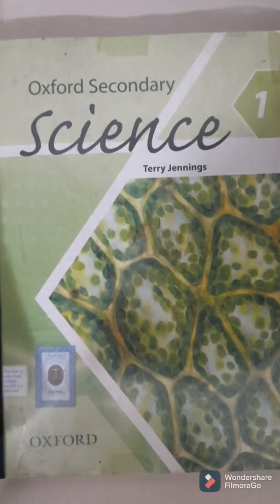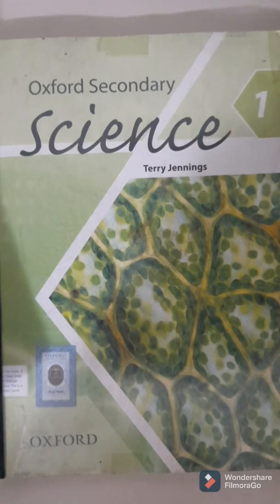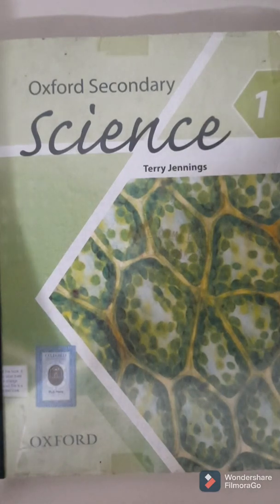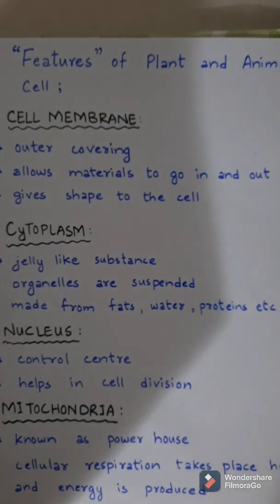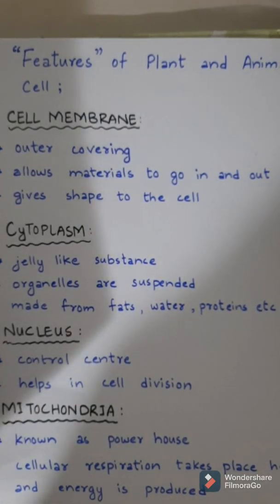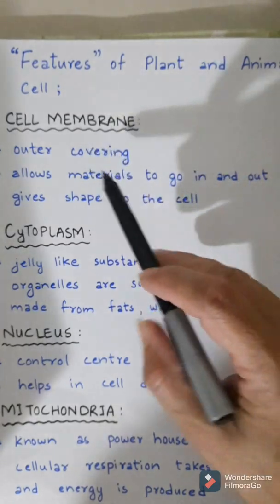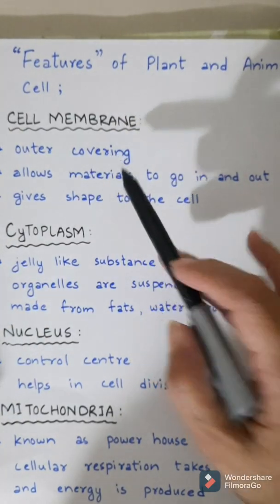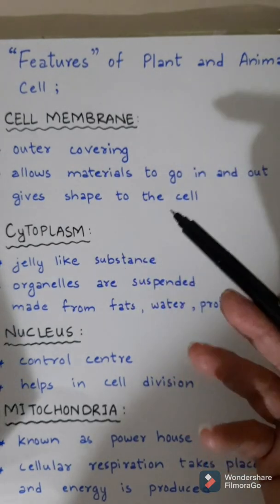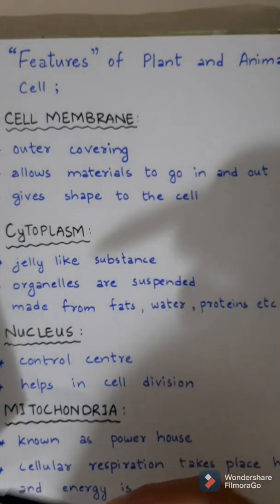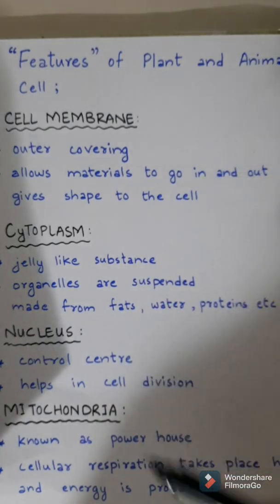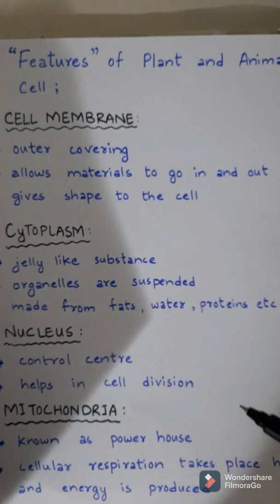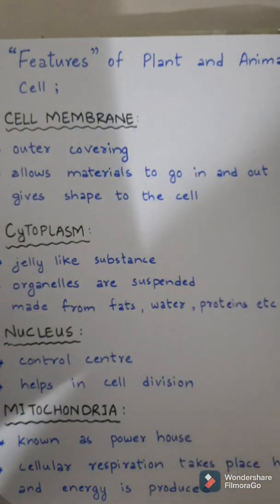Now you have learned that both plants and animals have cells. Although they are different, they have some parts or features in common. Let's discuss those parts along with their functions one by one. Common features of both plant and animal cell — number one: cell membrane. It is the outer covering of the cell. It gives shape to the cell. It allows material to go in and out of the cell — obviously oxygen, carbon dioxide, water, food, waste materials, etc.